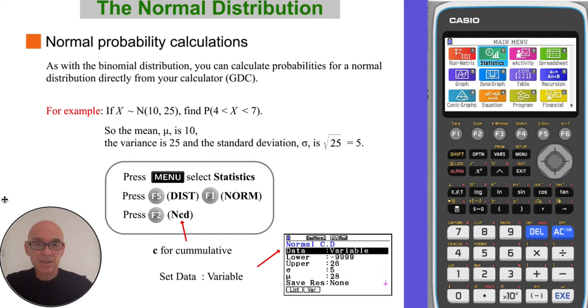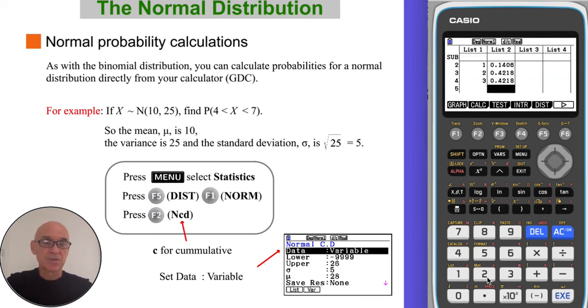To calculate the given probability, we need to input the distribution into your calculator. From the menu, choose option 2 for statistics, then press F5 for distribution, then F1 for normal distribution, and then press F2 for a normal cumulative probability calculation.